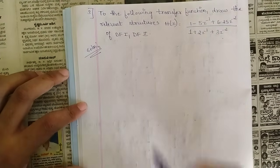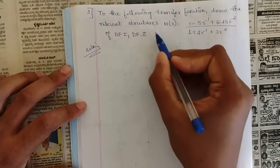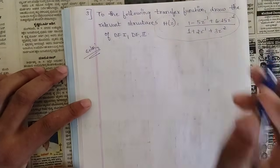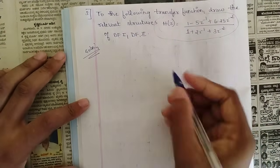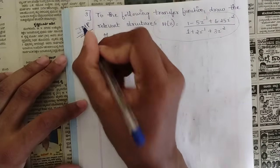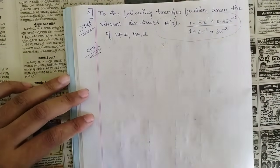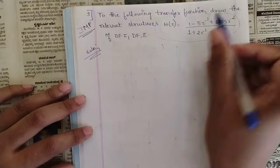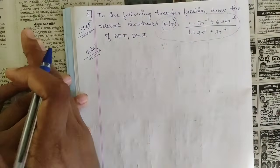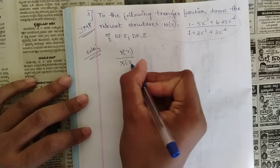The next question gives the transfer function H(z) and asks us to draw the DF1 and DF2 structures. This is not a direct problem — they have not given y(n) directly; instead they have given H(z). Our goal is to find y(n) with y(n) on one side and all other terms on the other side. Since H(z) is the transfer function, it equals output Y(z) divided by input X(z).